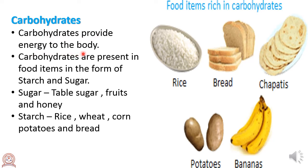Carbohydrates provide energy to the body. There are two types: sugar — examples are table sugar, fruits, and honey — and starch — examples are rice, wheat, corn, potatoes, and bread.